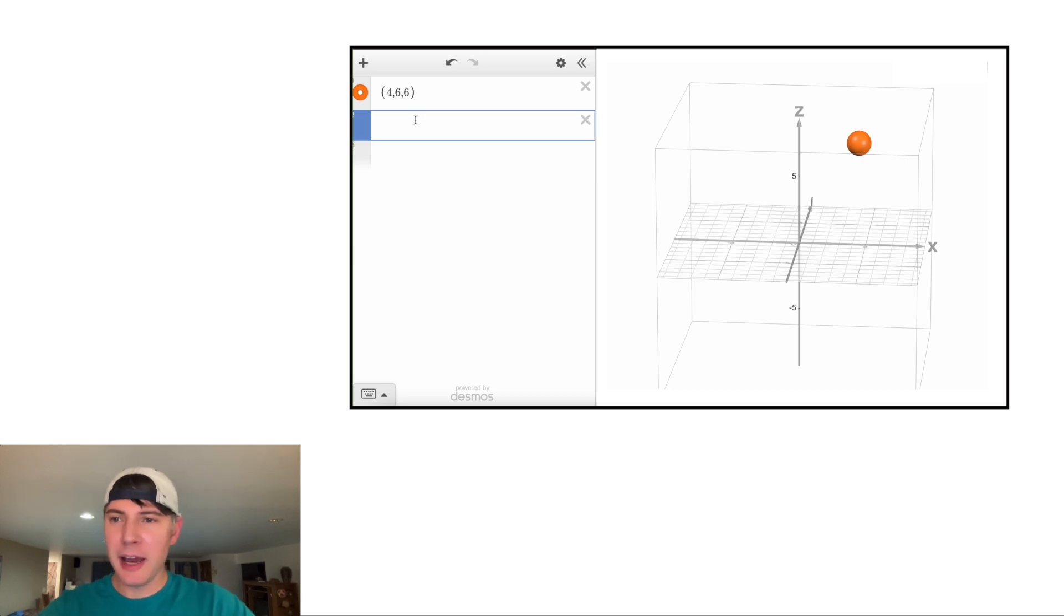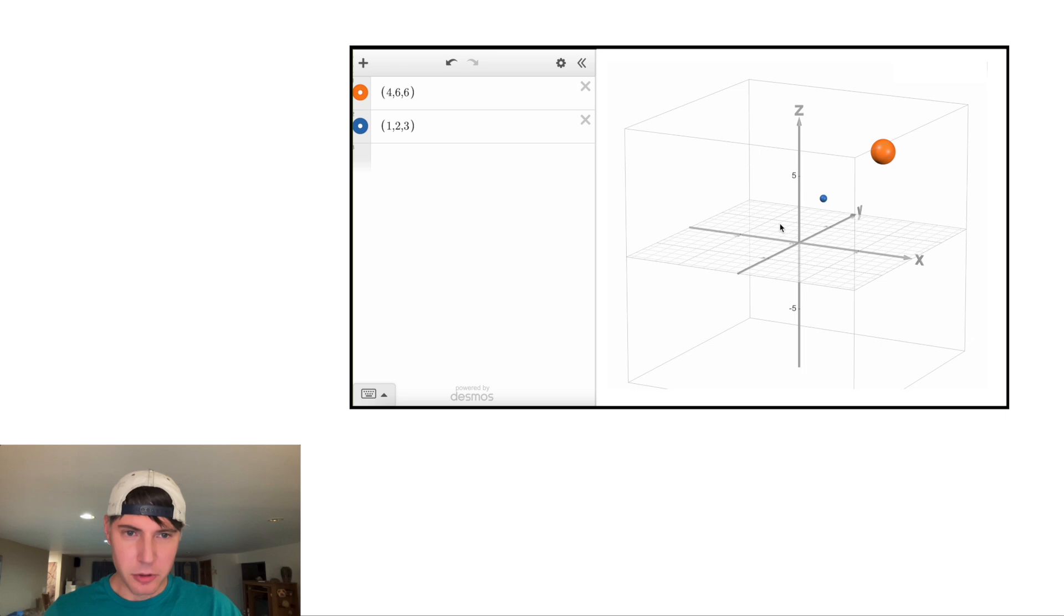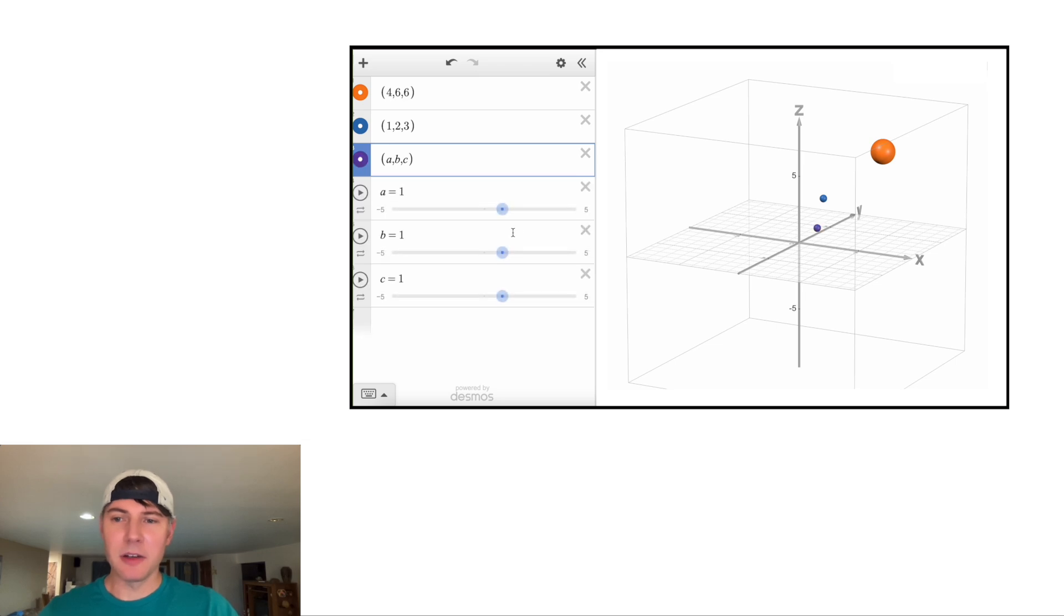Then I plotted another point at (1,2,3) and it was blue. And I did another point at (A,B,C) where A,B,C could be any value we want. So we can move these around. And I had this green. These could be any value we want. It can move around.